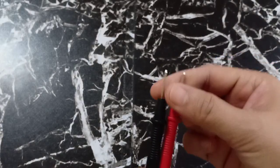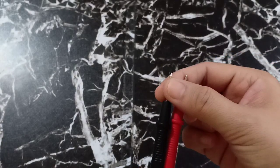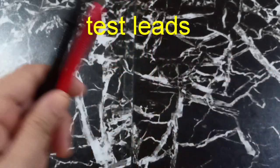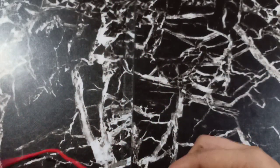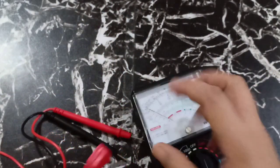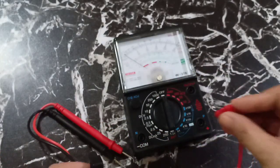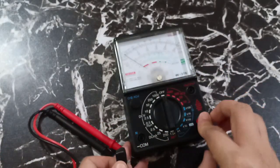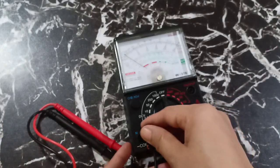The needle-like points here are called the test leads. We're going to put the test probes, the positive here and the common here.